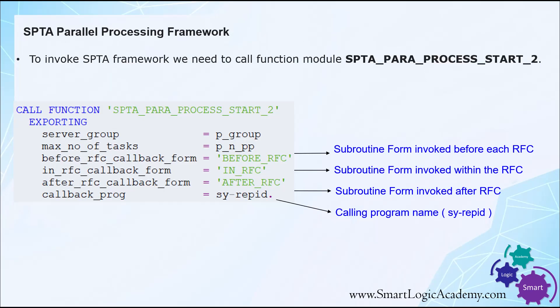To invoke the SPTA framework, we need to call a function module. In this function module, we have to use three subroutines to build our own parallel processing logic. The input to this function module is a server group name, number of parallel processes, and three different subroutines we have to pass: before RFC, in RFC, and after RFC, to implement parallel processing logic. We also need to pass the calling program name.